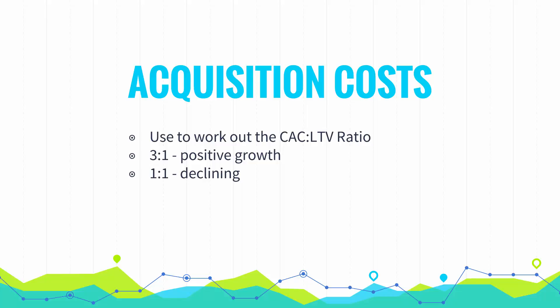Essentially, acquisition cost can help you find out whether you're having positive growth or whether you're declining. If you have a three-to-one ratio of acquisition costs to lifetime value of a customer, you're doing well and you want to keep it above that level. If you're at a one-to-one ratio, you're probably declining, and it's going to be unsustainable — the amount of customers you're getting relative to the costs you're spending to acquire them.